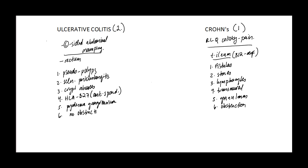This is very important to know: Ulcerative Colitis has no obstruction, and Crohn's Disease does have an obstruction — in the area of the terminal ileum. That's why they get the B12 deficiency. Which one is going to have strictures? Which one is going to be associated with adenocarcinoma?